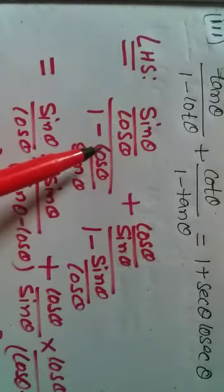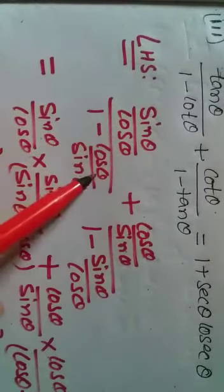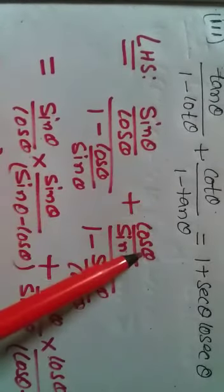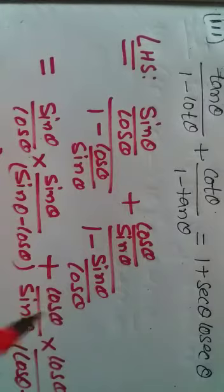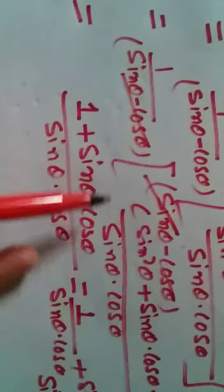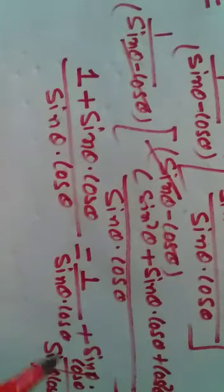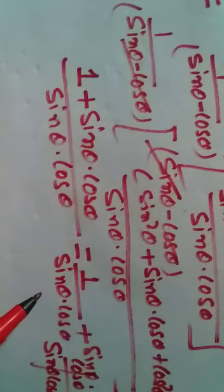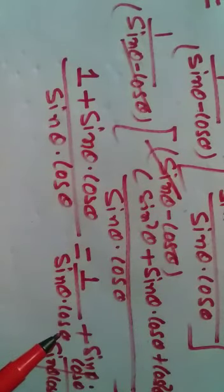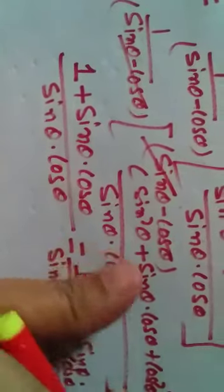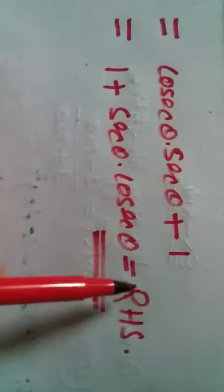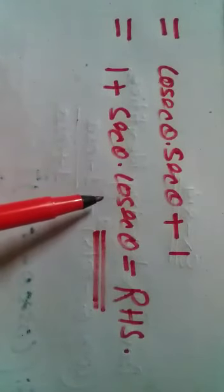Let us review once more: we arranged tan θ as sin θ/cos θ and cot θ as cos θ/sin θ. For cot θ, the denominator becomes 1 minus sin θ/cos θ. After taking the LCM and calculating, we got 1 plus sin θ·cos θ over sin θ·cos θ. Splitting this as 1/(sin θ·cos θ) plus 1 gives sec θ plus 1, which is our RHS.